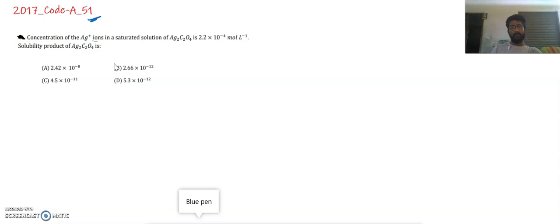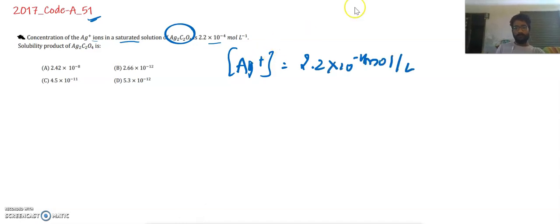Concentration of Ag+ ions in saturated solution of Ag2C2O4 is 2.2 into 10 power minus 4 mole per litre. That means Ag+ concentration is given as 2.2 into 10 power minus 4 mole per litre. We are being asked the solubility product of Ag2C2O4.